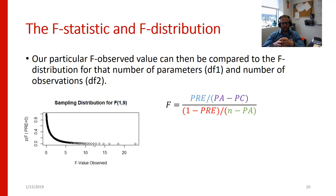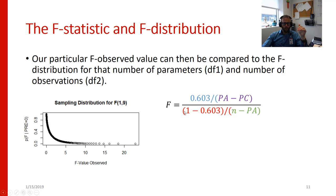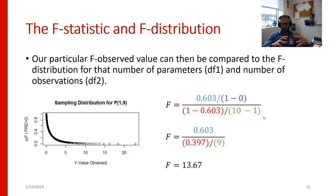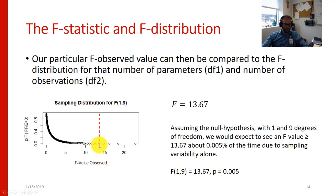We're going to have a lot of F values that are relatively small, and then a much lower proportion of F values that are big. So bigger F values are more statistically unusual. Our PRE was 0.603, so PRE goes in the numerator, 1 minus PRE goes in the denominator, the numerator degrees of freedom are 1 minus 0, and the denominator degrees of freedom are 10 minus 1. This becomes 0.603 divided by 1, over 0.397 divided by 9. Crunching those numbers, you end up with an F statistic of 13.67.